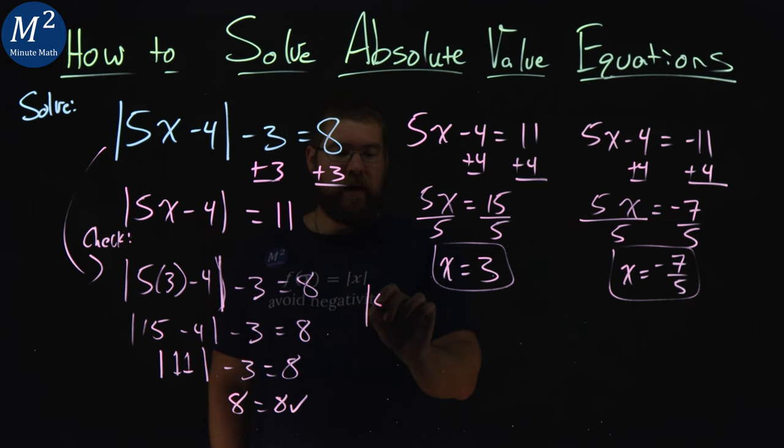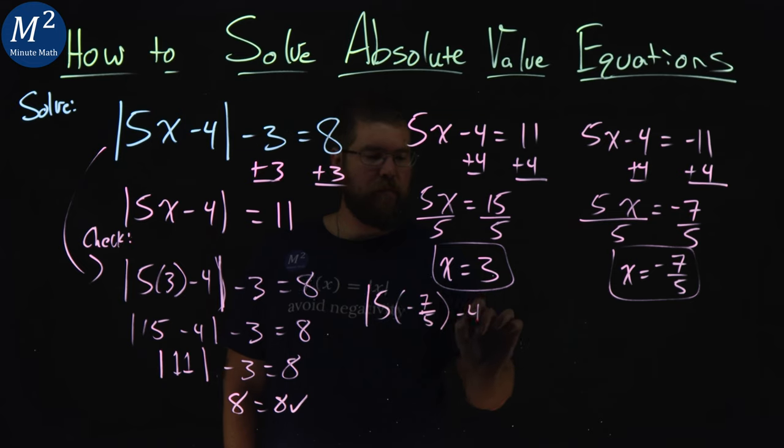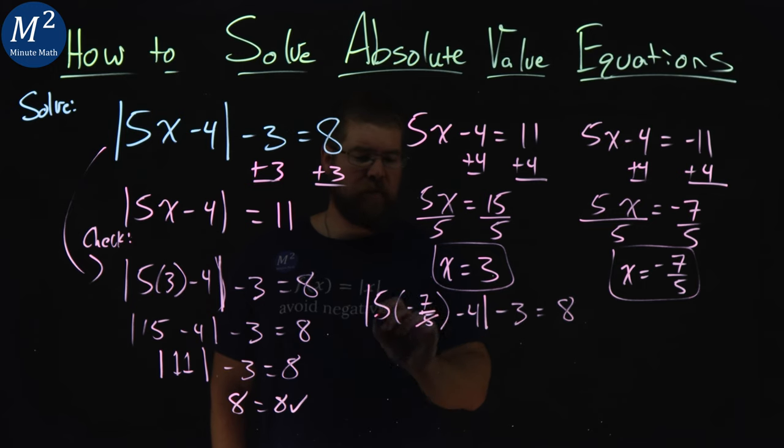So we have the absolute value of 5 times a negative 7 fifths here, minus 4, minus 3 equals 8. Well, 5 times a negative 7 fifths, 5's cancel.